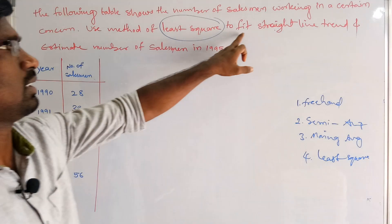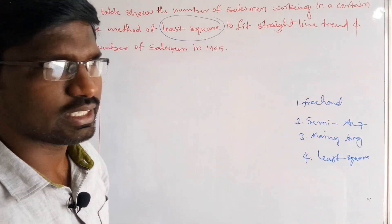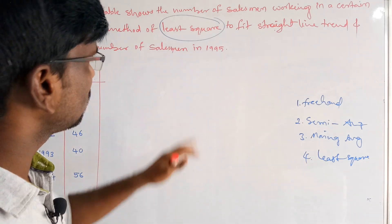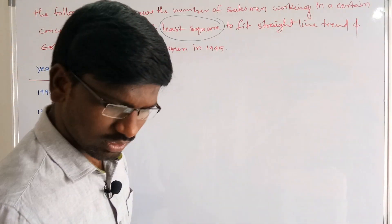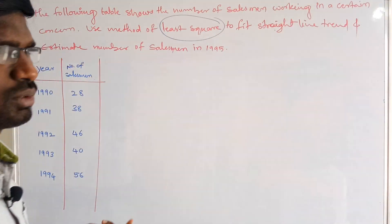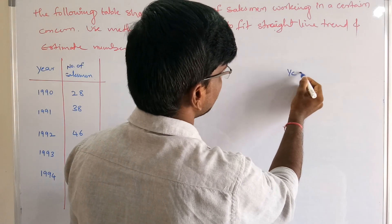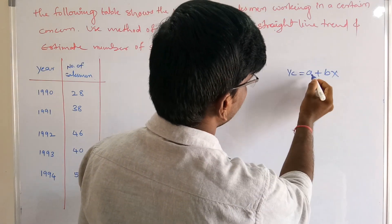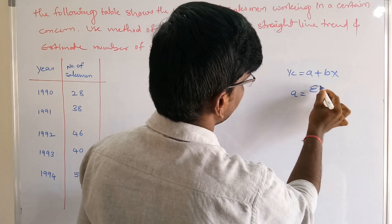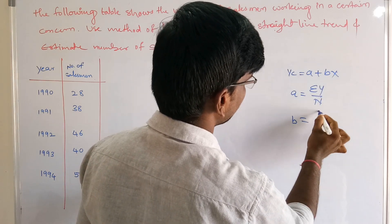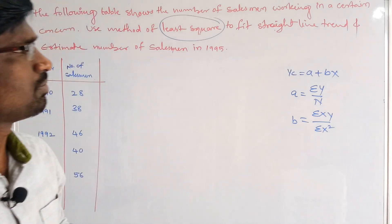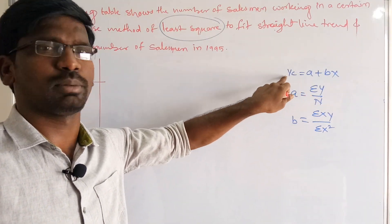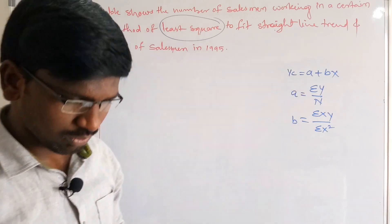Before solving this problem, we need to know the formulas used in the least square method. The trend line equation is yc = a + bx, where a = summation of y divided by n, and b = summation of xy divided by summation of x squared. This formula is used for calculating the trend values of the respective years.